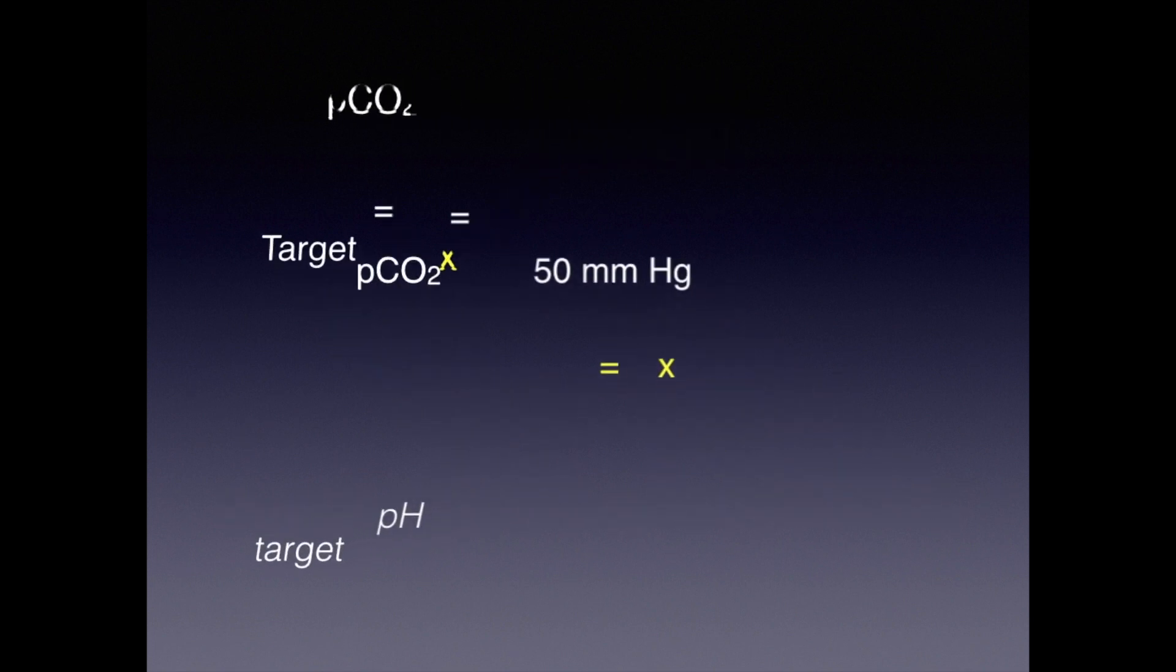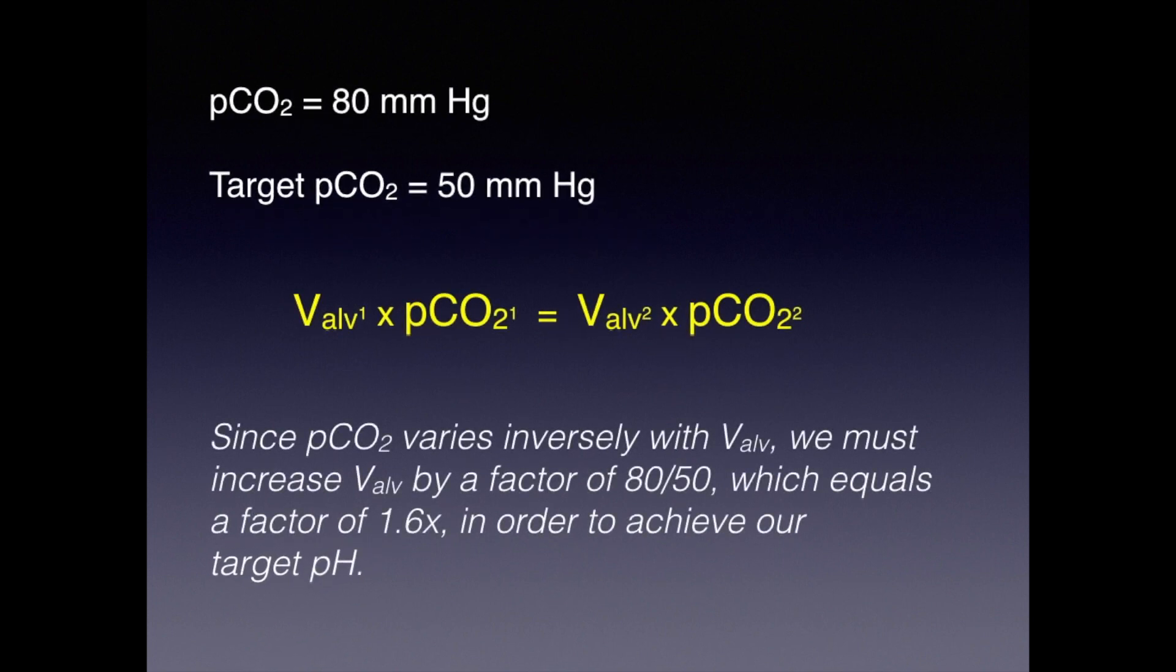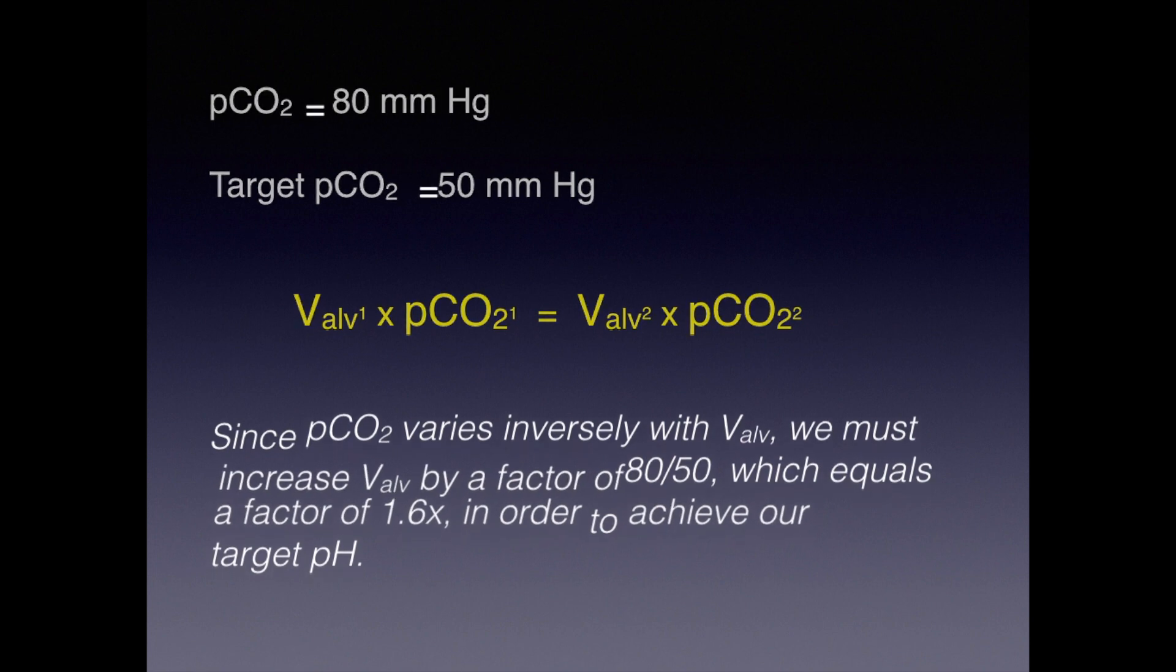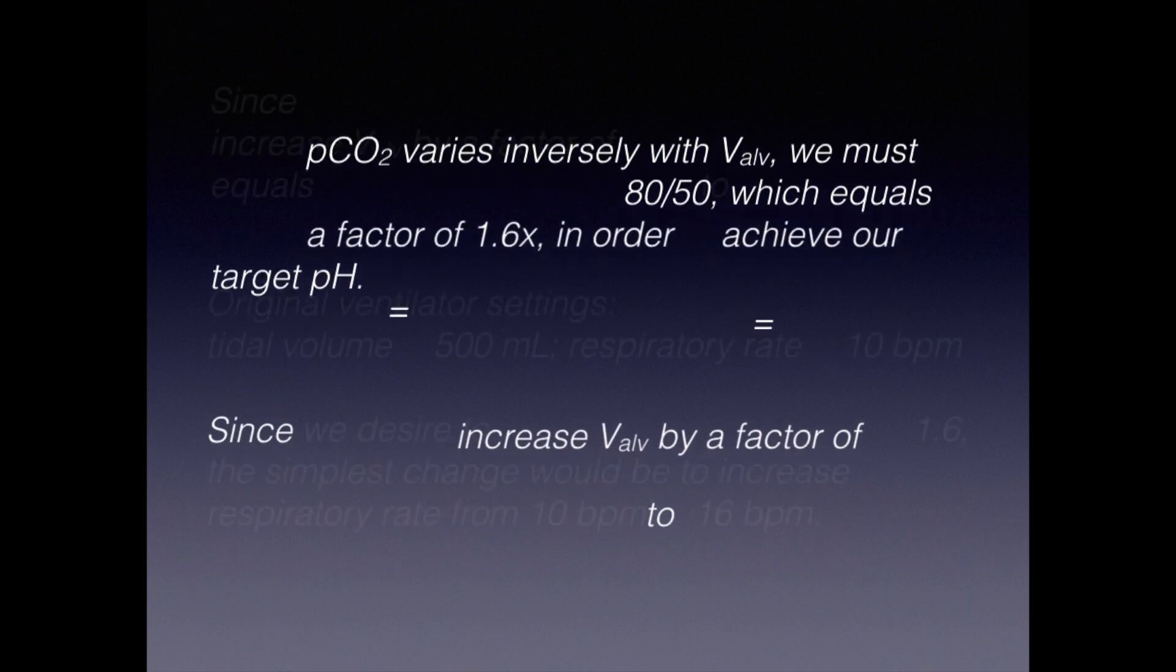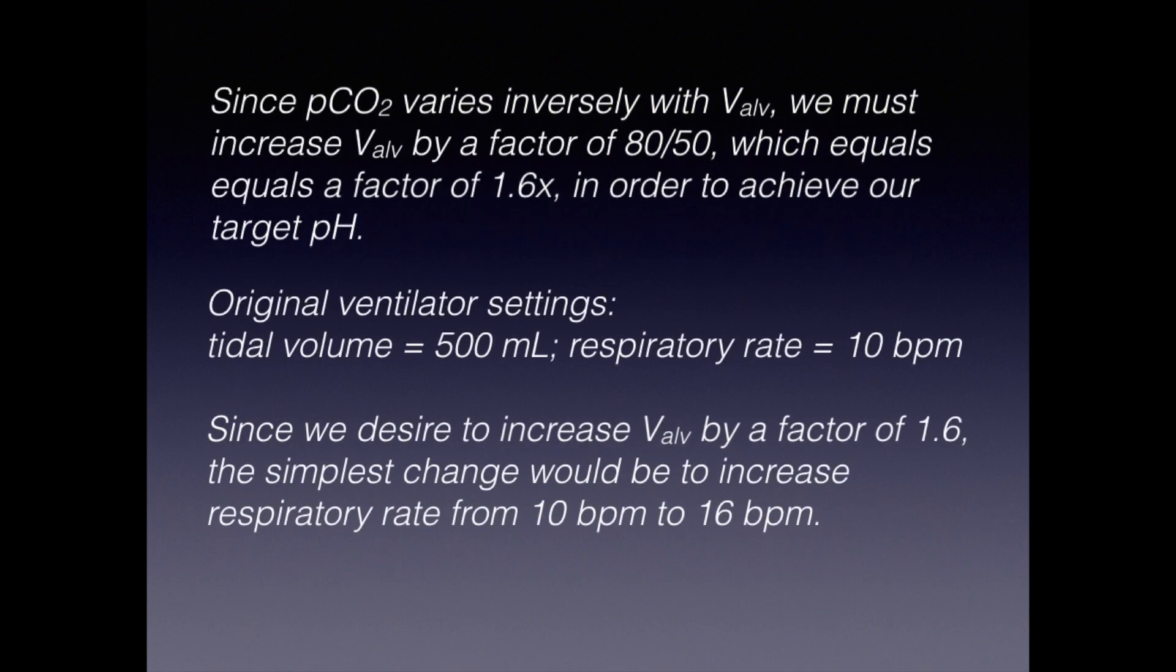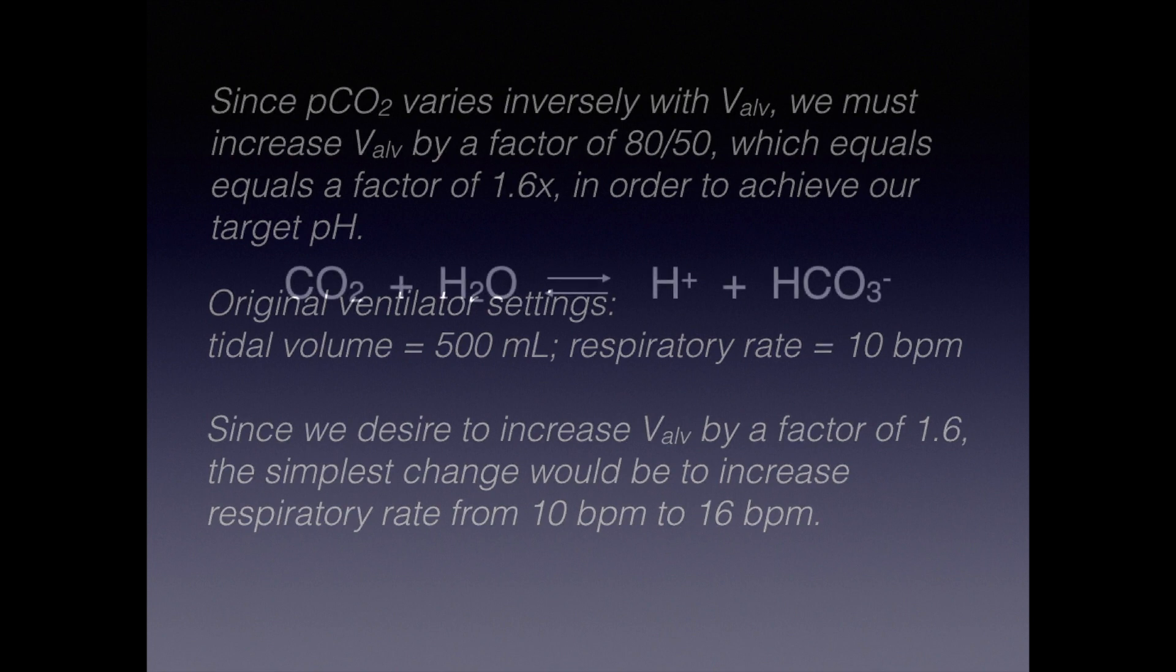Since our current pCO2 is 80 and our target is 50, and since pCO2 varies inversely with ventilation, we find that we must increase alveolar ventilation by a factor of 80 over 50, or 1.6 times in order to achieve our target pH. Recall that our initial ventilator settings are a tidal volume of 500 milliliters is delivered 10 times per minute. Because we desire to increase alveolar ventilation by a factor of 1.6, the simplest change to our ventilator setting would be to increase respiratory rate from 10 breaths per minute to 16 breaths per minute.